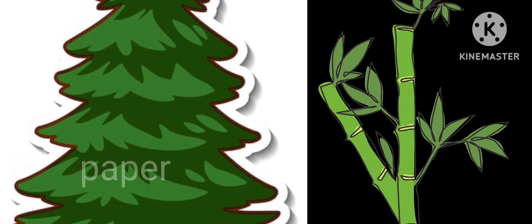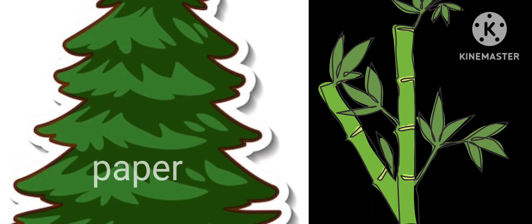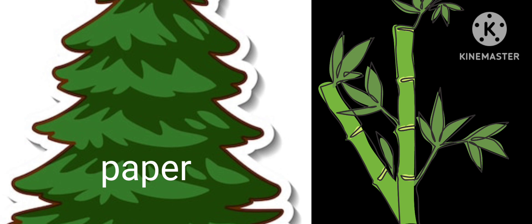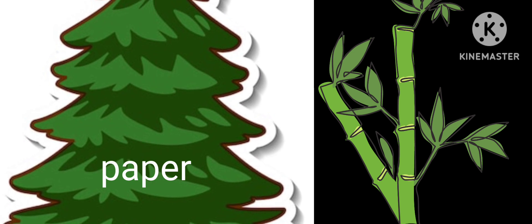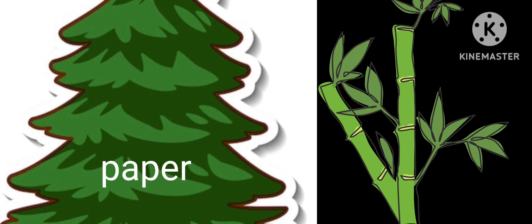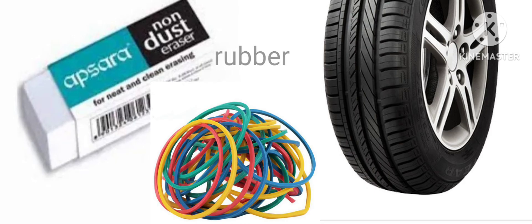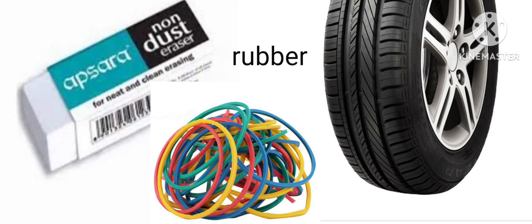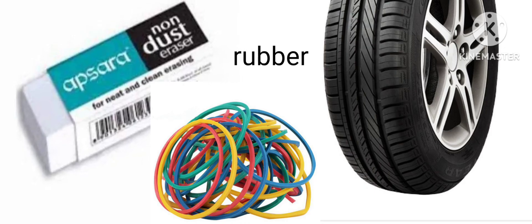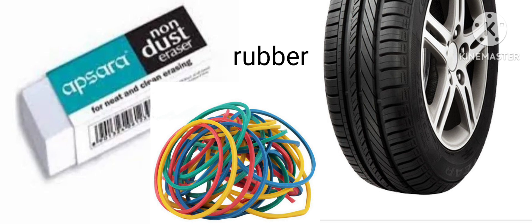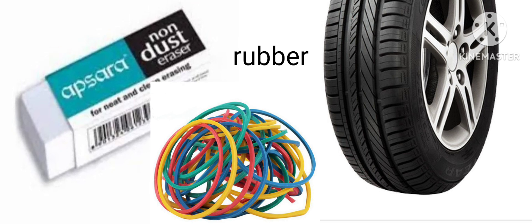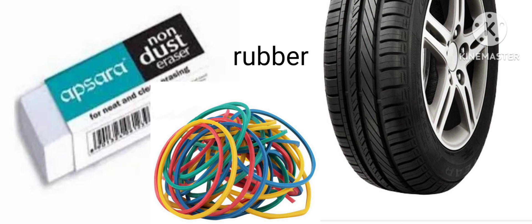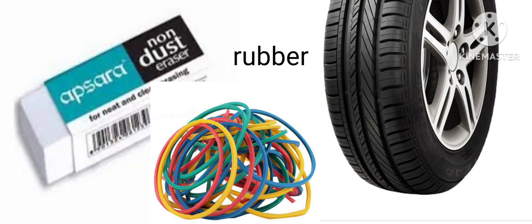Paper. Paper is also made from trees. The trees used to make paper are pine and bamboo trees. Rubber. Plants also give us rubber, which is used to make tires, erasers, rubber bands, etc.